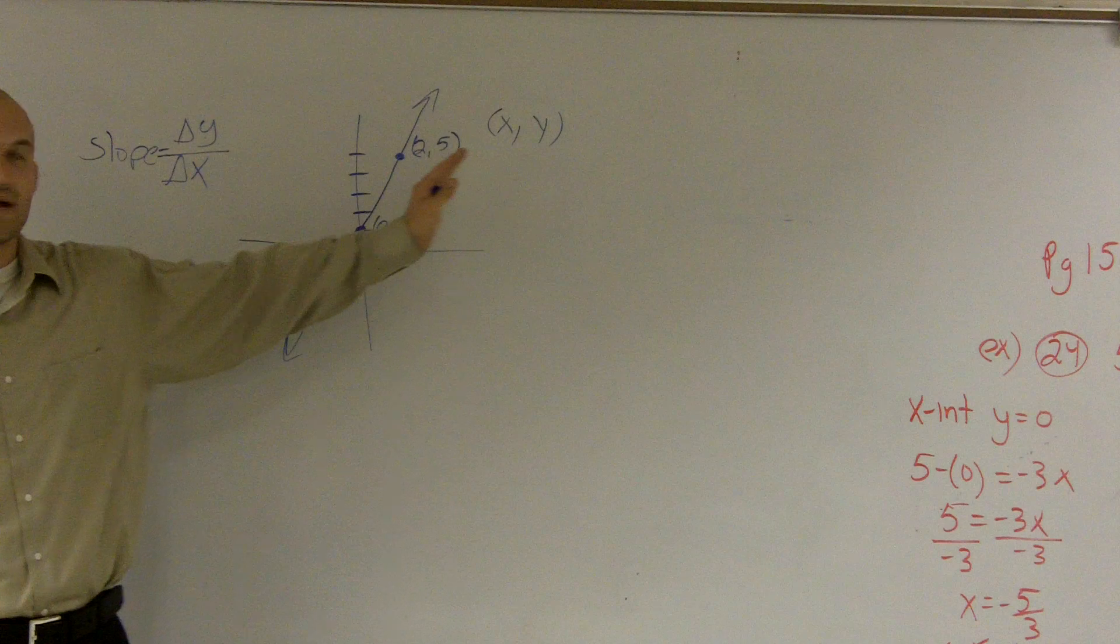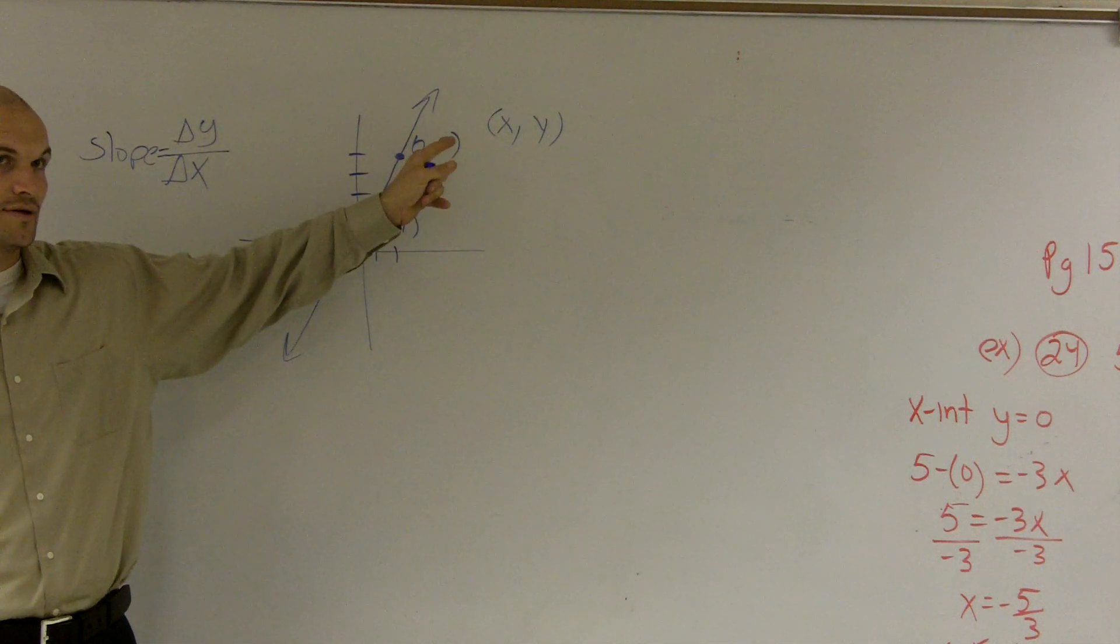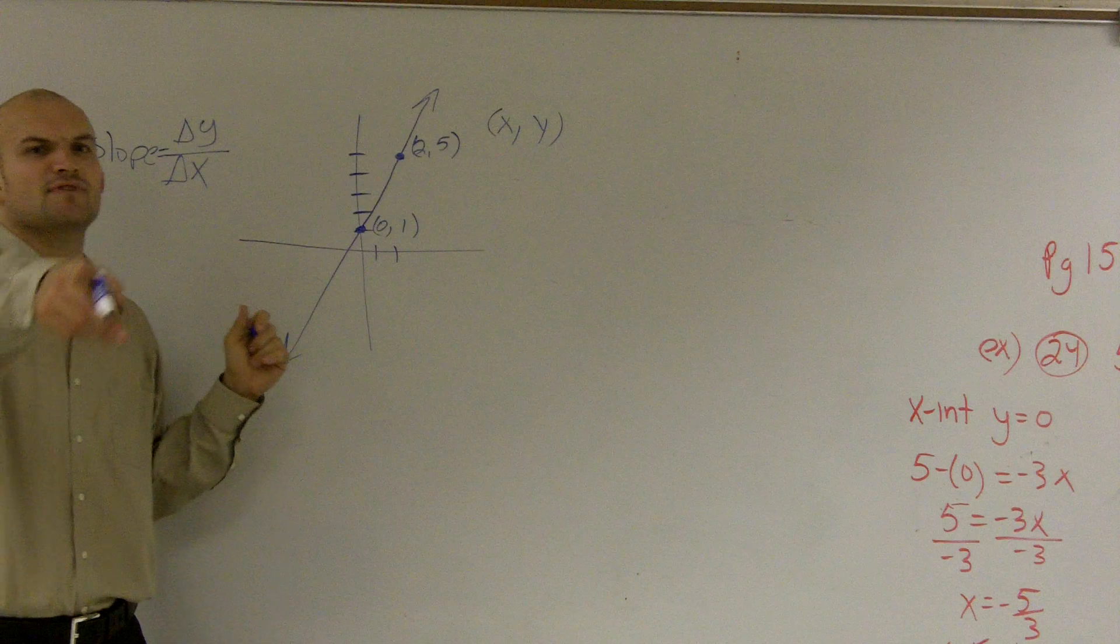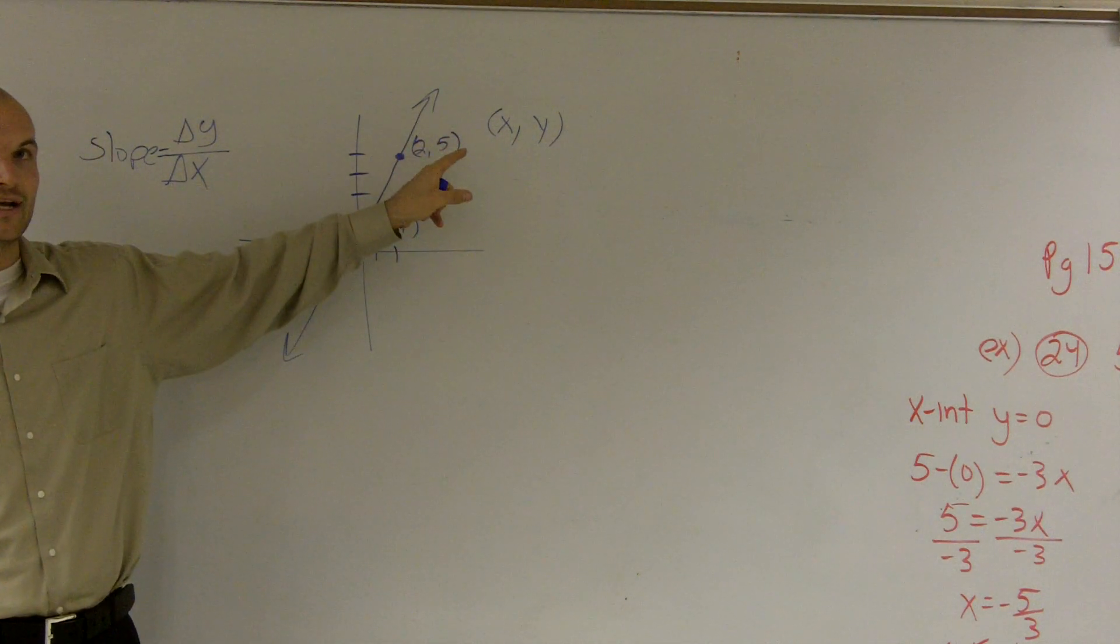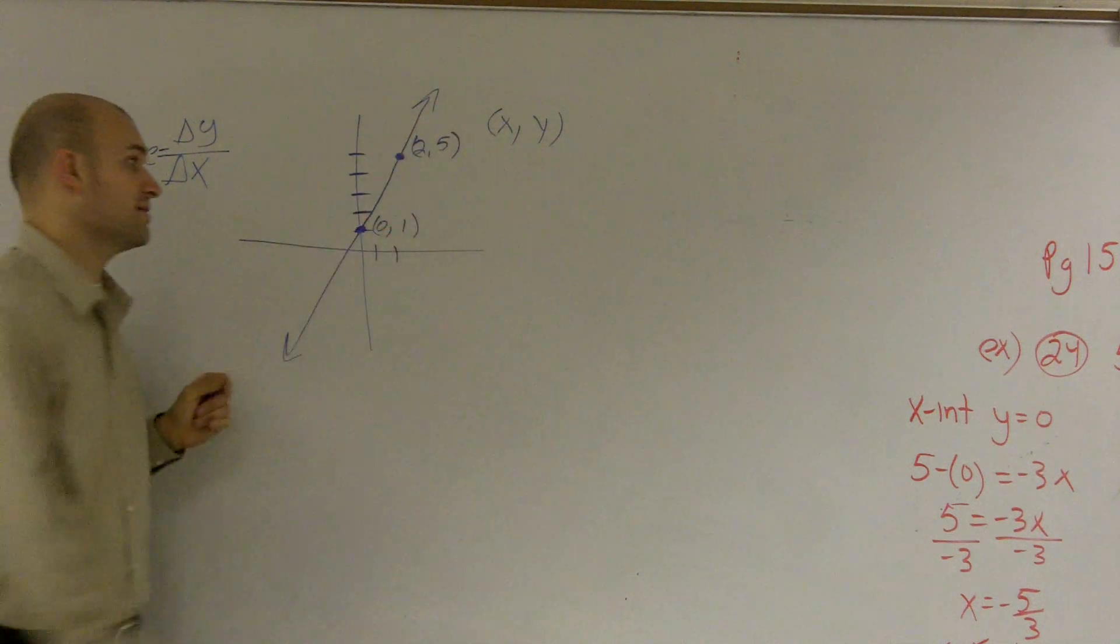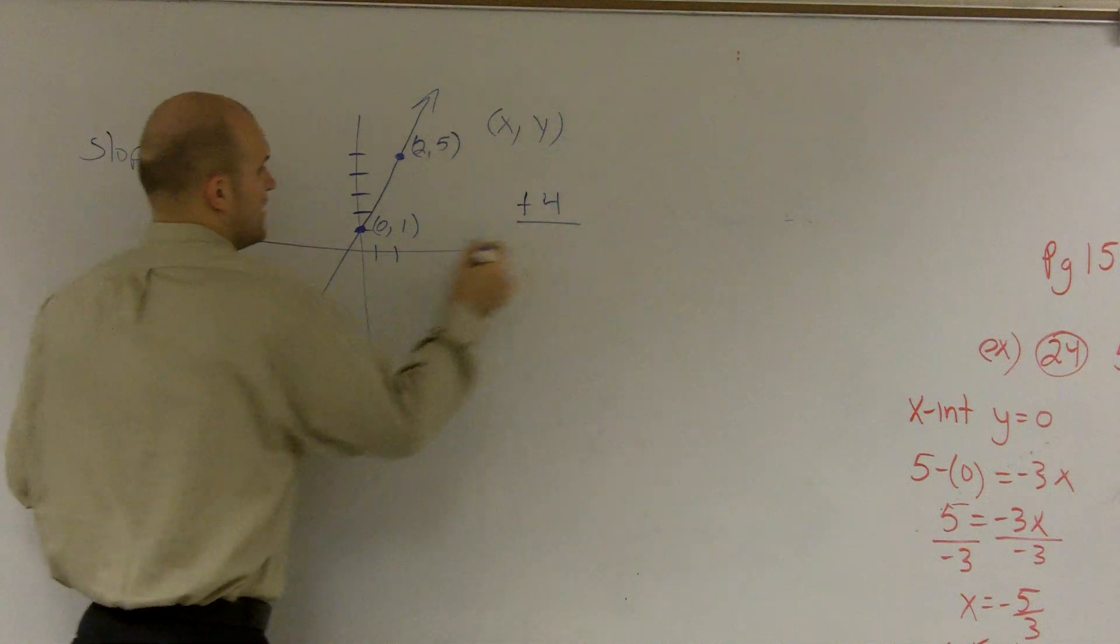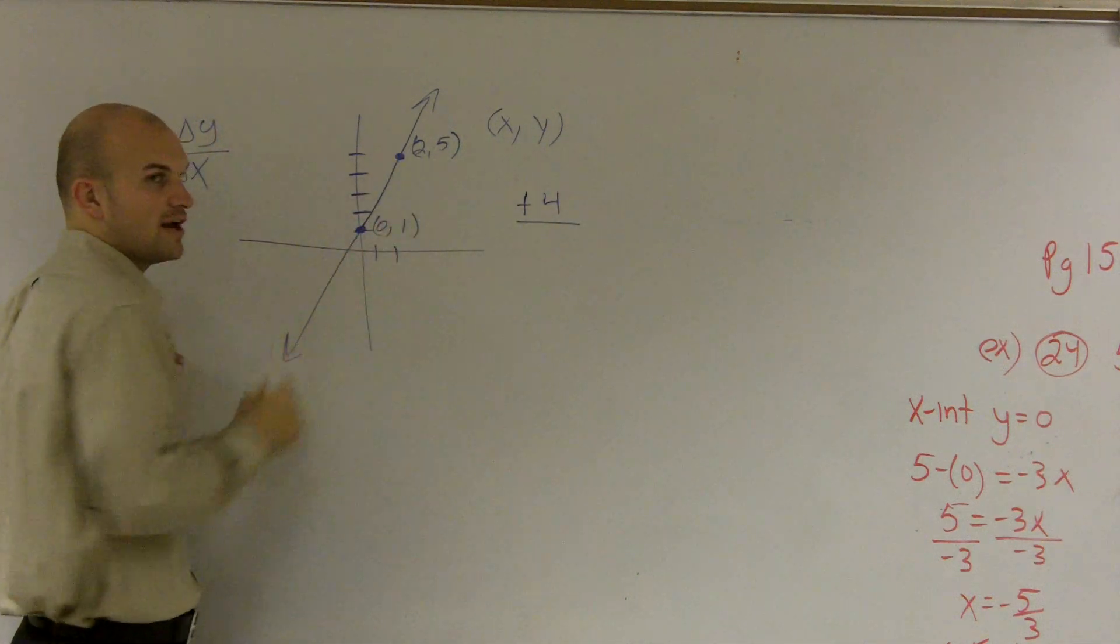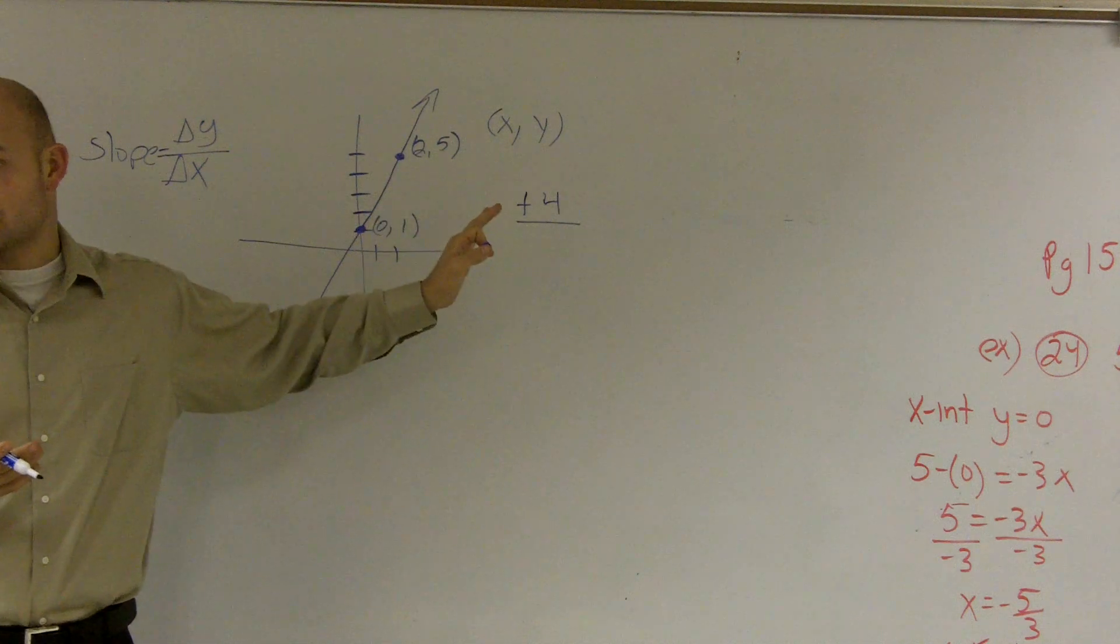If you look at this problem, we have a y coordinate in both of these points. We have a 1 and a 5. To go from 1 to 5, what did I do? Did I go up or down? Up. I went a positive 4 up. Then, to go from 0 to 2, how far did I have to move over? 2, right? I moved 2 to the right. So therefore, it's going to be positive.